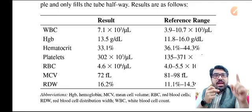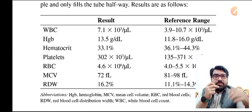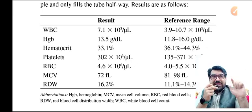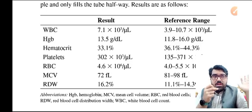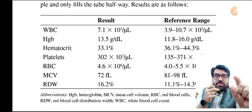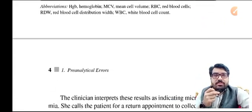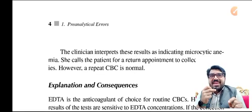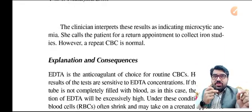If you look at the MCV, that is 72, and the hemoglobin is normal. This looks like microcytosis — but the patient is otherwise well, it is a routine examination. I will tell you why there is apparent microcytosis: this is an error, not an actual finding in the patient. The clinician interprets this as microcytic anemia, calls the patient for a return appointment, and orders iron studies.